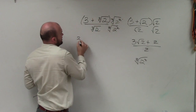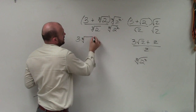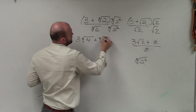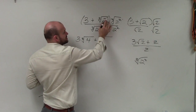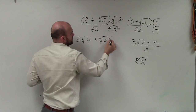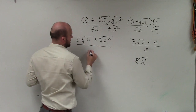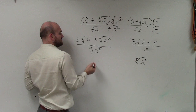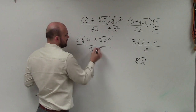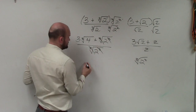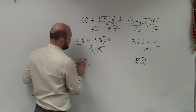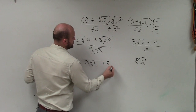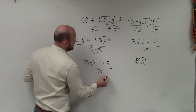Now let's apply the distributive property here. I have 3 times the cube root of 2 squared, which is just the cube root of 4, plus here I have the cube root of 2. When we multiply those, that's 2 to the first times 2 to the second, which is 2 to the third power — divided by the cube root of 2 to the third power. The cube root of 2 cubed is just going to be 2. So my final answer is 3 times the cube root of 4, plus 2, divided by 2.